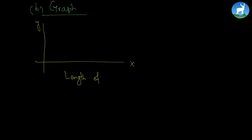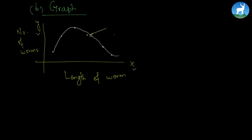Now let us look at another kind of chart which is called a graph. Like the bar diagram, the graph also consists of an x-axis and a y-axis and the information keeps on varying. So we have different points for different information.